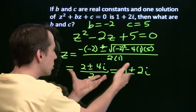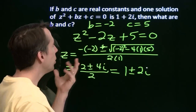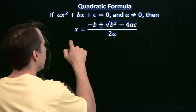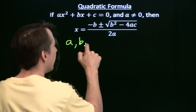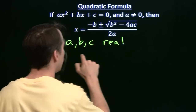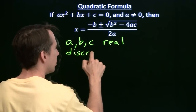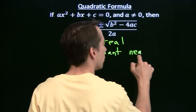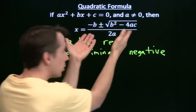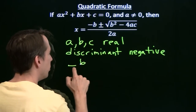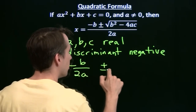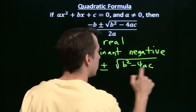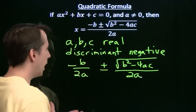That's interesting — the roots are conjugates. How could we have seen that right from the very beginning? Check this out. Think about the quadratic formula here. Whenever a, b, and c are real and the discriminant is negative, look at how we can write our roots. We can break it up, just like we did before, into negative b over 2a plus or minus the square root of the discriminant over 2a.